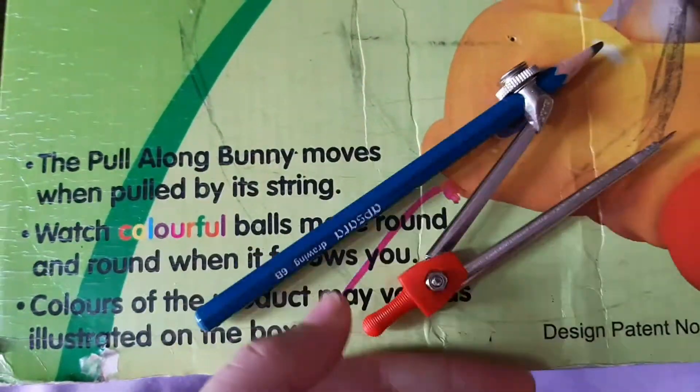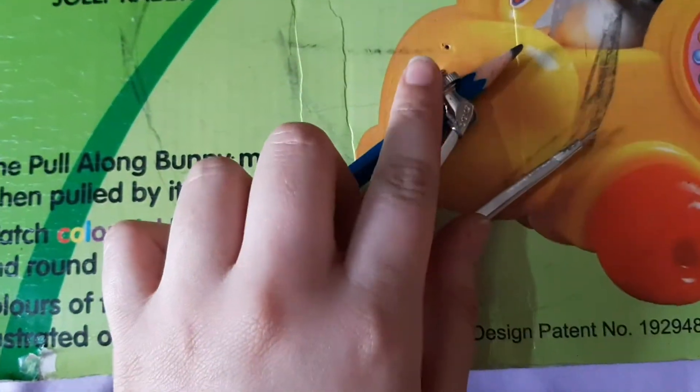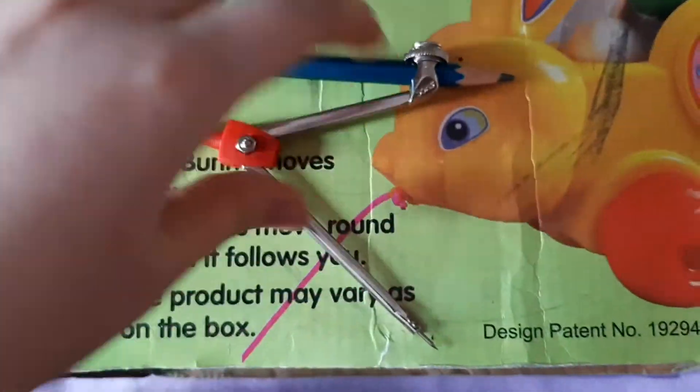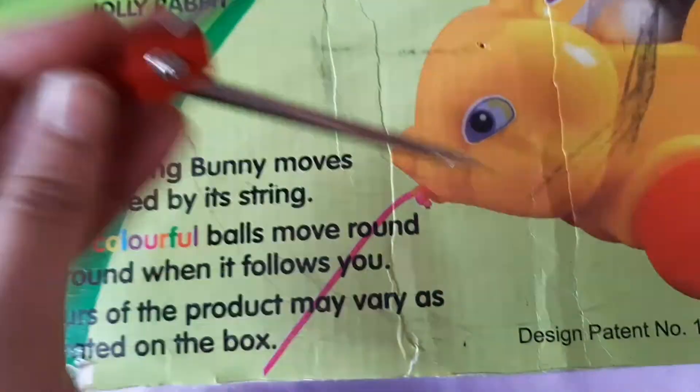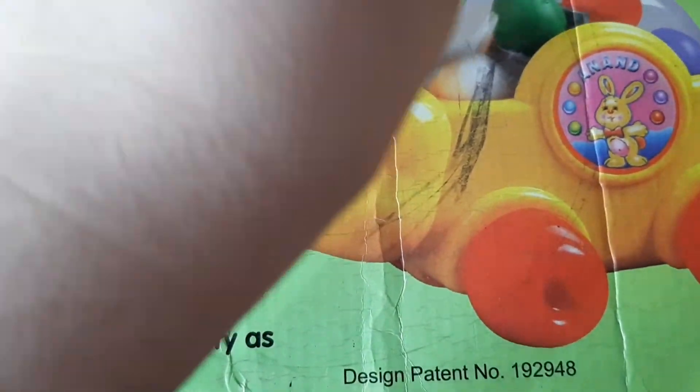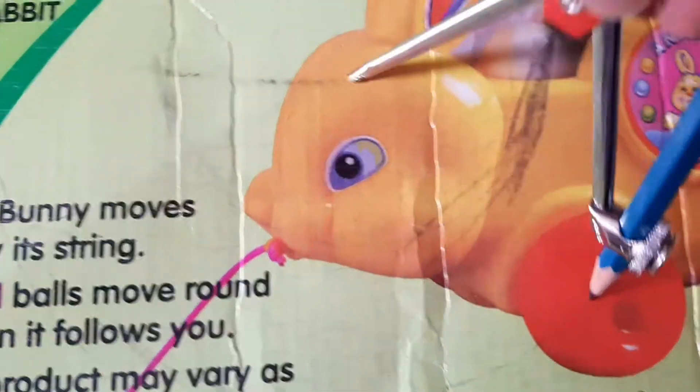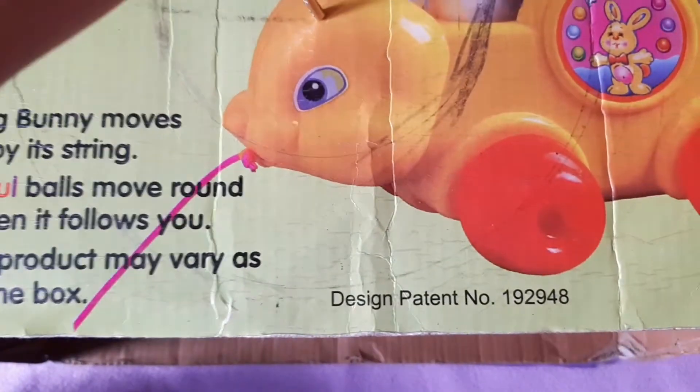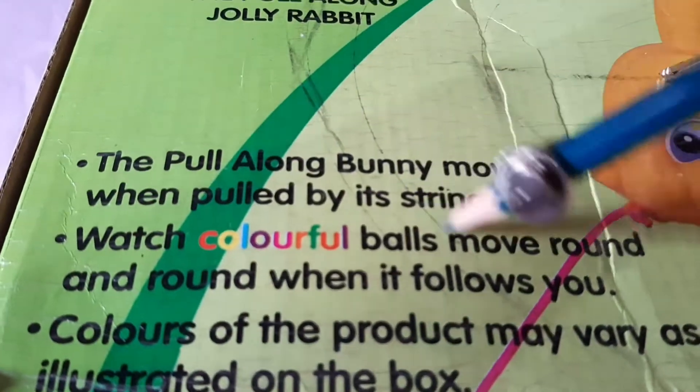You have to decide the size, whether you want a small circle or a big circle. I have opened the legs of the compass to its maximum size. Now you have to draw a circle, and after drawing, with the help of scissors, cut the circle.